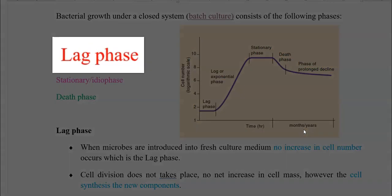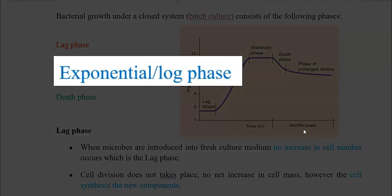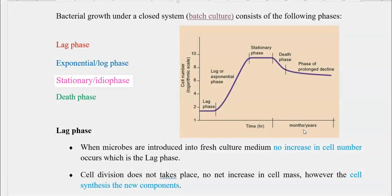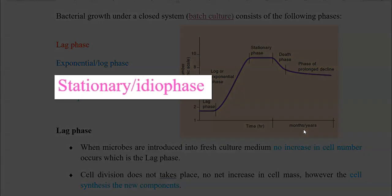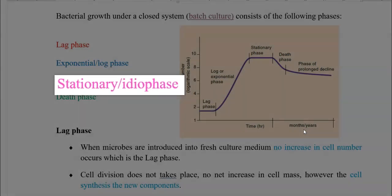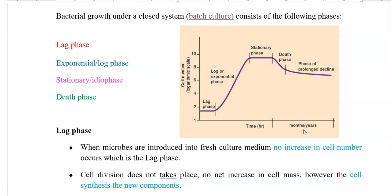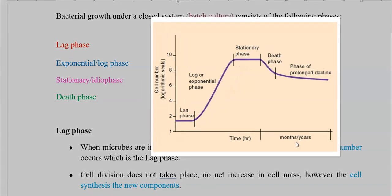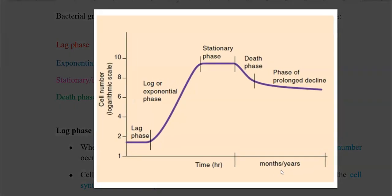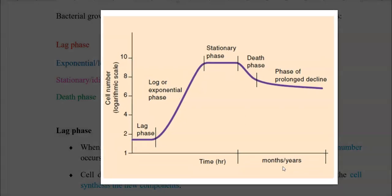The phases include lag phase, exponential or log phase, stationary phase, and the final death phase. You can see all these different phases of the culture over a time period in the growth curve shown on the right-hand side.